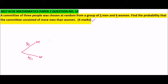In the second round, we can also have a man or a woman chosen. Because the first time we chose a man, the men reduced to 4 and the total number of people reduced to 10. So the probability of choosing a man in the second round is 4/10. The probability of choosing a woman is 6/10, because the women are still 6 but the total has reduced by 1.